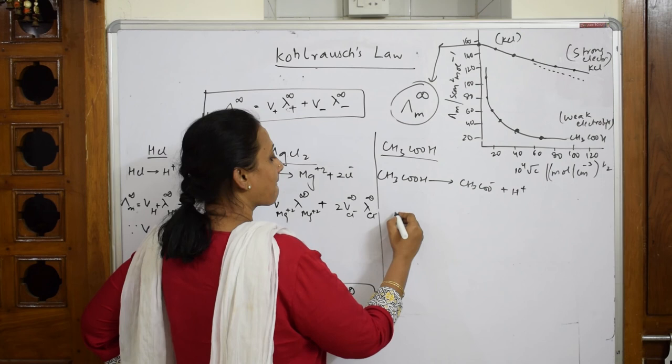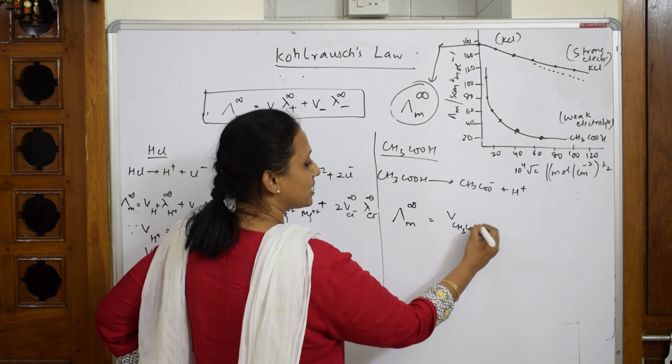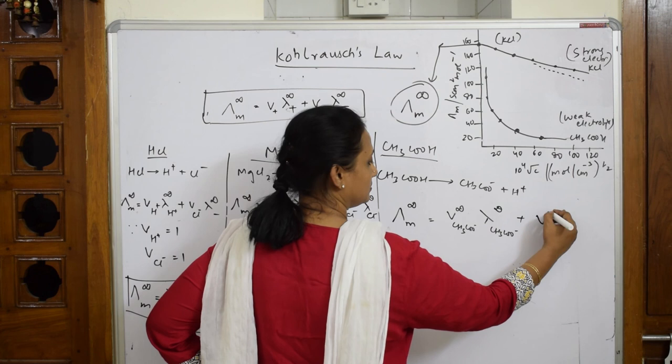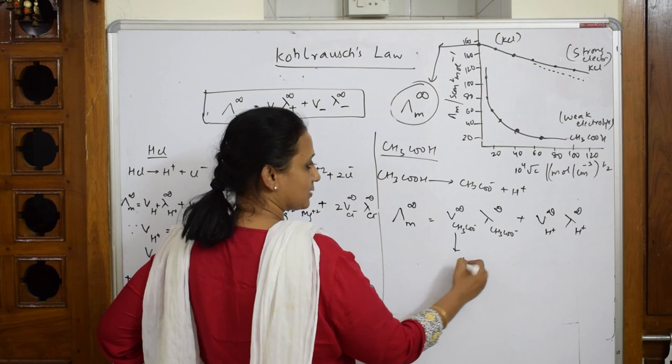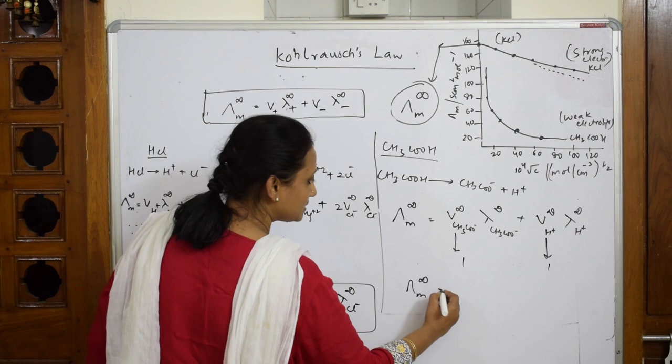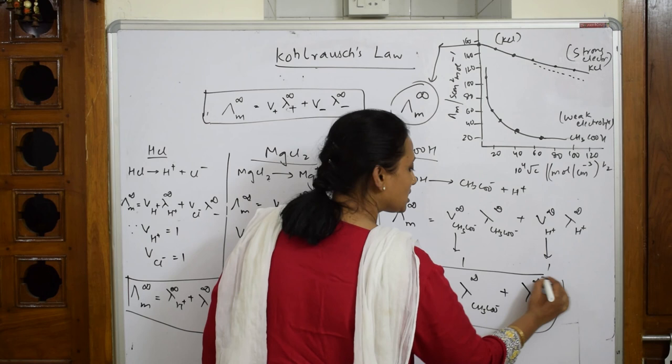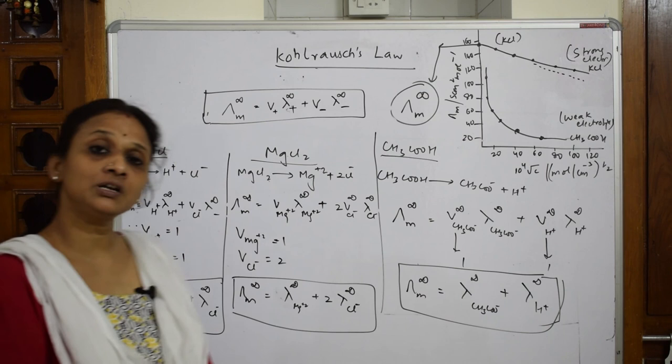For acetic acid: λm∞(CH₃COOH) = ν(CH₃COO⁻)·λm∞(CH₃COO⁻) + ν(H⁺)·λm∞(H⁺), which equals λm∞(CH₃COO⁻) + λm∞(H⁺). This is how Kohlrausch framed the formula for finding molar conductivity for both strong and weak electrolytes. We can now start with the applications of Kohlrausch's Law, starting from infinite dilution.